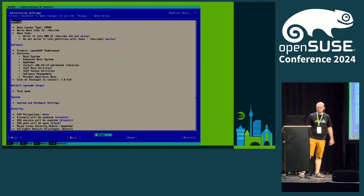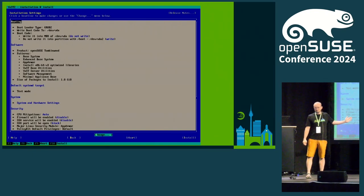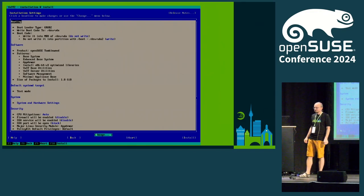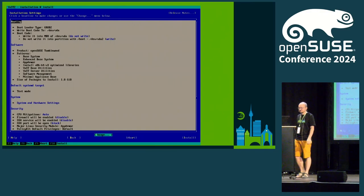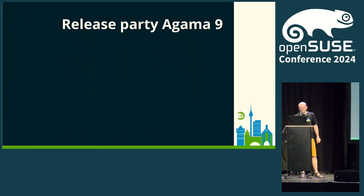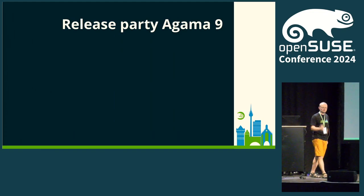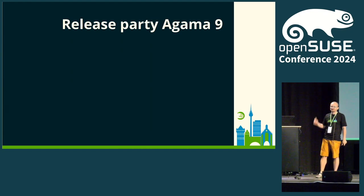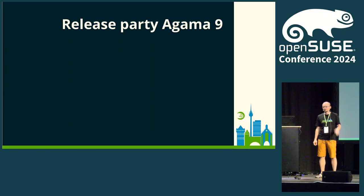Of course, we have the old ncurses interface too. It's up to you how you like it — it looks like nice retro, but it can scare some users if they see it for the first time when they boot the medium. Today is the official release of Agama 9 — our blog post is published. What you see in the screenshot is currently in Agama 9, so feel free to download it. We have an announcement on our blog, so give it a try and you'll see.